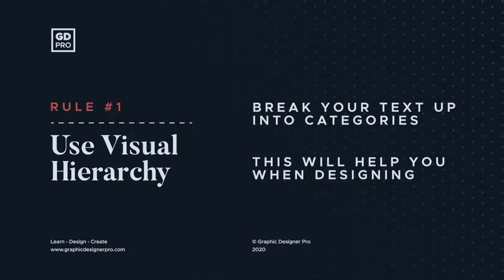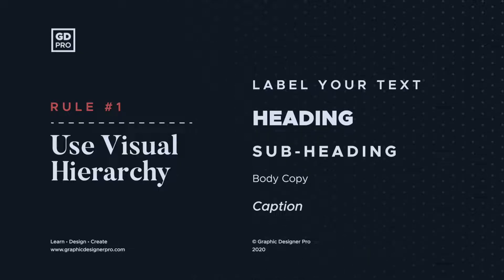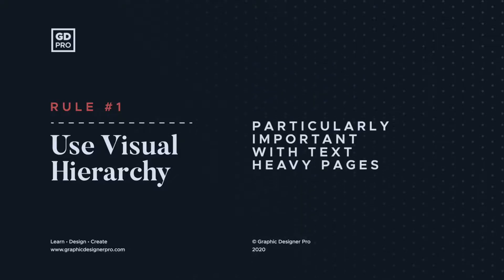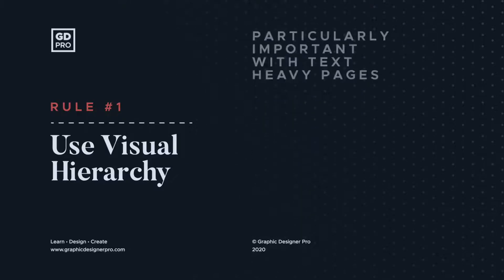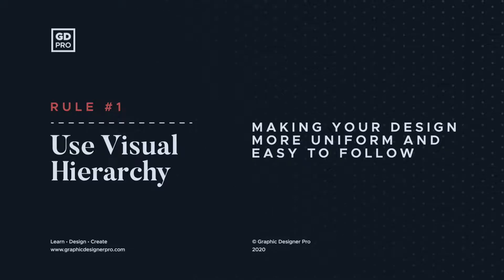So this could be a case of labelling your text with heading, subheading, body copy, caption — wherever there's a need for a difference in visual importance. This is especially useful with pages of text, as you can apply consistent styling to all of the text sharing the same label or category, making your designs more uniform and easy to understand in the process.